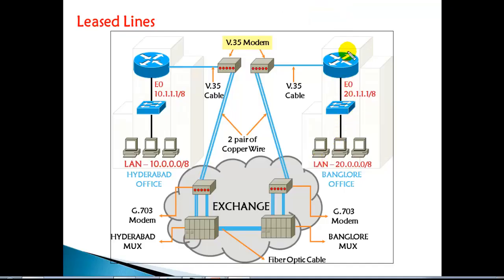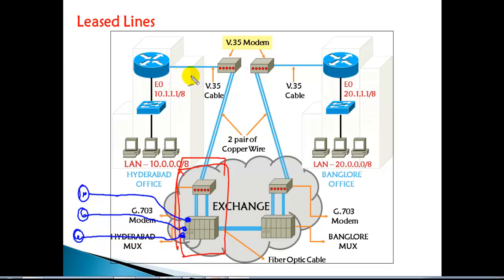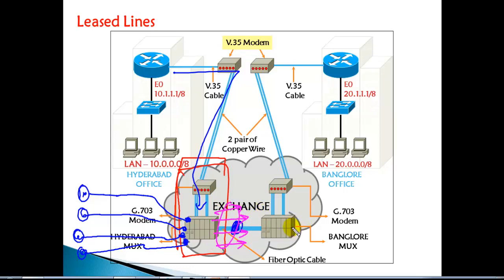The MUX — multiplexer — is a device that handles multiple signals on the same cable. For example, in Hyderabad I'm not the only customer connecting to the exchange; there are multiple customers all connecting to the MUX. The multiplexer allows you to differentiate each signal so they don't interfere with or disturb each other, even though they may travel on the same fiber cable. That is the job of the multiplexer in the service provider network.